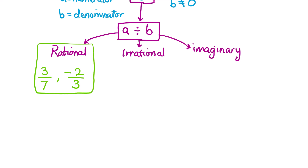Focusing on irrational numbers, one example is the square root of two divided by seven, where the square root of two is a continuous value that, when divided by seven, gives an overall irrational number. Another example is six over pi, where pi is considered irrational because it is a continuous number, making six divided by pi an irrational number as well. These are examples of irrational numbers in fraction format.